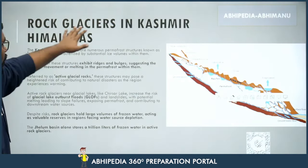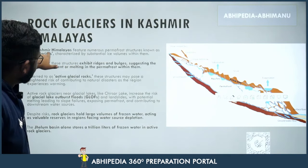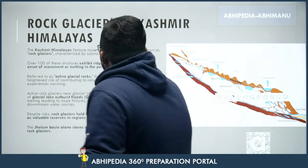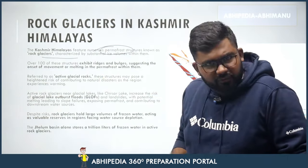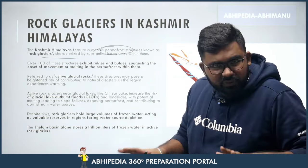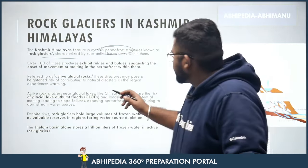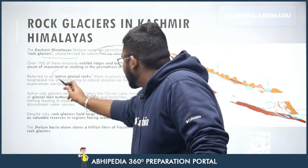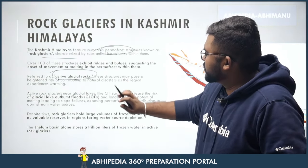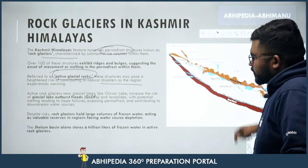Rock glaciers in Kashmir, Himalayas: Kashmir and the Himalayas feature numerous permafrost structures known as rock glaciers. Permafrost means 'perma' (permanent) plus 'frost' (frozen) — so it is a permanently frozen form of ground. Also referred to as active glacial rocks, these structures may pose a heightened risk of contributing to natural disasters as the region experiences warming.